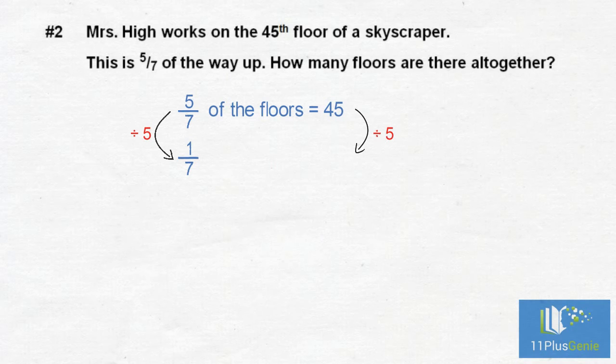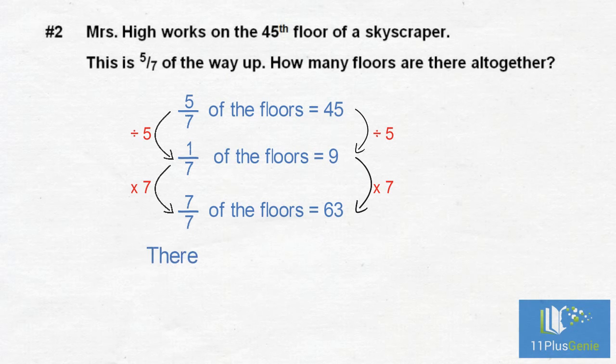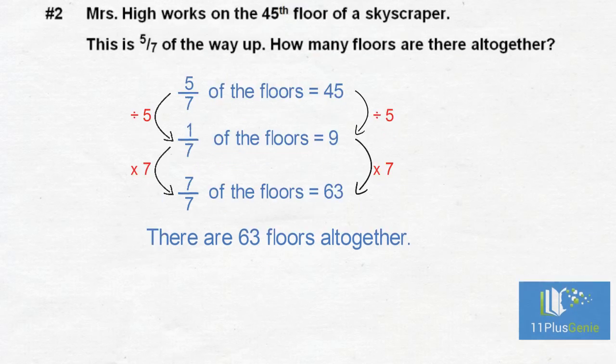To find the total number of floors, we times one-seventh by seven, and we must times the nine by seven, which gives us 63. There are 63 floors altogether.